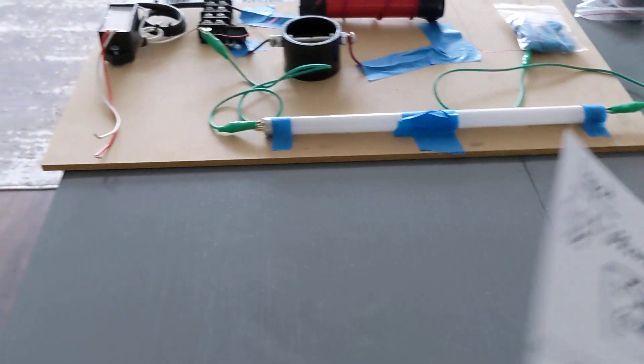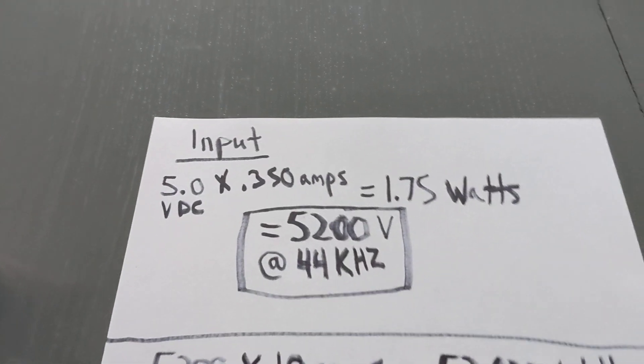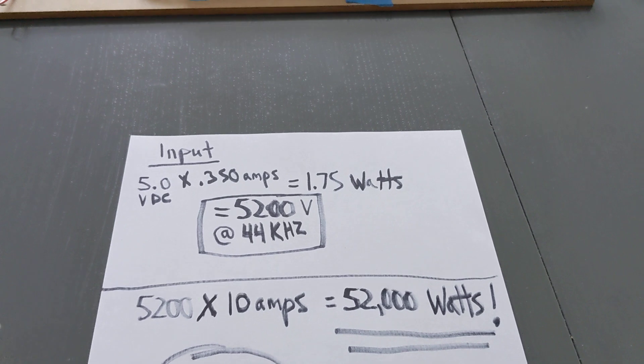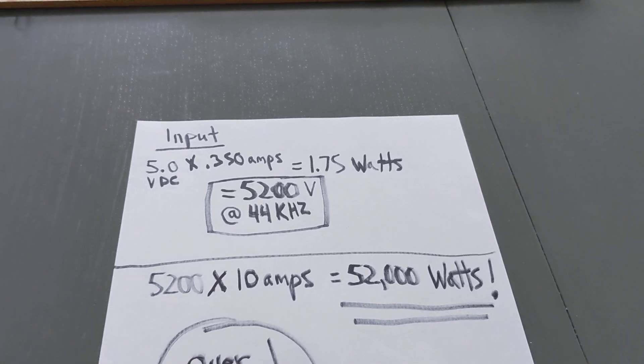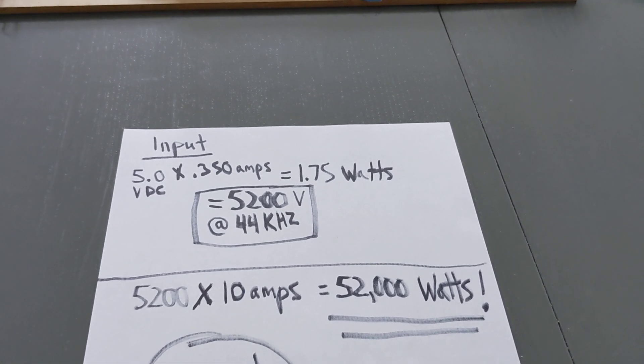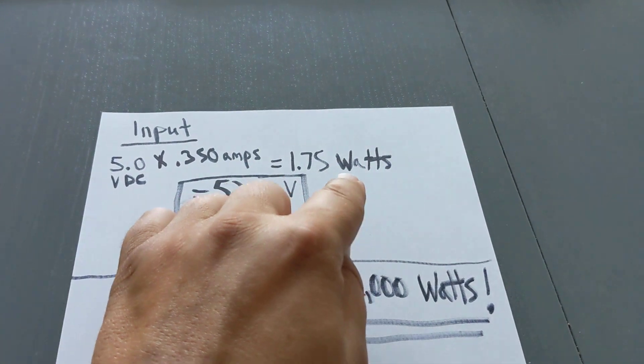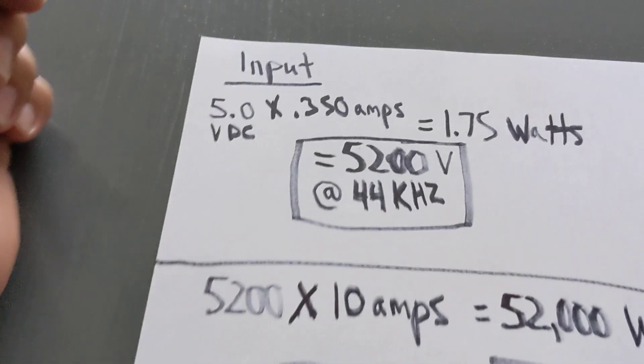One is about my inputs. So we're looking at a device that is over unity. Over unity, basically, if you have Wikipedia or Google it, what is over unity? It's basically you're able to produce more power output than what is going into the system. And we're going to classify that value as watts.